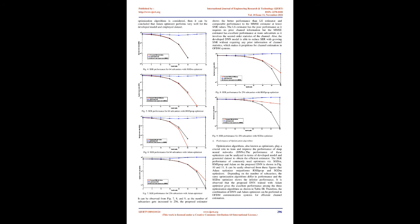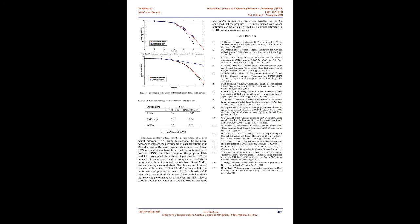A comparative analysis is done for evaluating the performance of three estimators at different sub-carriers. When only 64 sub-carriers are used, the proposed DNN outperforms the conventional methods at all signal-to-noise ratios, as shown in Figures 4, 5, and 6. If the performance of three optimization algorithms is considered, then it can be concluded that Adam optimizer performs very well for the developed model and employed dataset. It can be observed from Figures 7, 8, and 9, as the number of sub-carriers gets increased to 256, the proposed estimator shows better performance than LS estimator and comparable performance to the MMSE estimator at lower SNR values. The LS estimator has poor performance as it requires no prior channel information, but the MMSE estimator has excellent performance at more sub-carriers as it involves the second-order statistics of the channel. Also, the developed DNN model is able to reduce SER with growing SNR without requiring any prior information of channel statistics, which makes it propitious for channel estimation in OFDM systems.